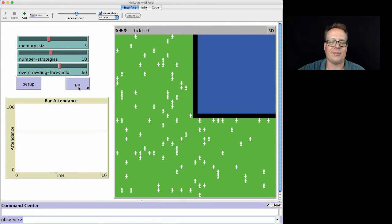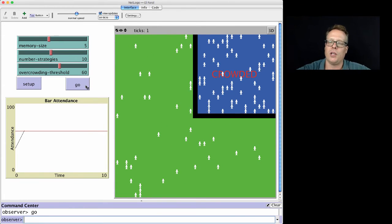If you hit Setup, you'll see that the world starts with no one in the bar. We can just run it one tick. Sometimes that's useful to do. Rather than hitting the Go button, I'll just type Go into the command center.